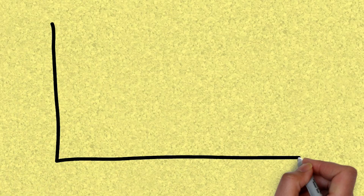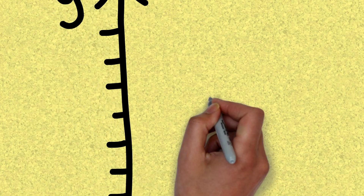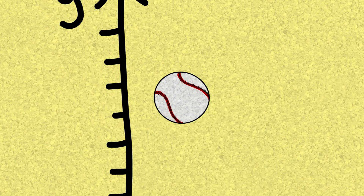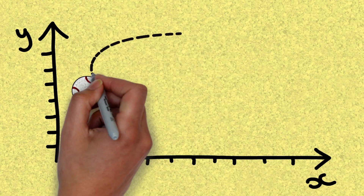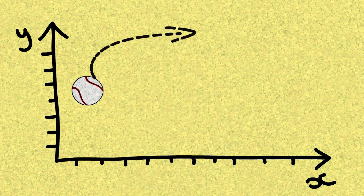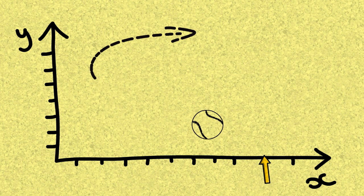Let's talk about Newtonian mechanics first. If you have a baseball and you throw it and give me initial conditions — like how fast you threw it and in which direction, kind of like projectile motion — I can use Newtonian mechanics to predict exactly the position where it's going to land and when exactly it's going to land. The prediction would be completely deterministic, based on the information you gave me.